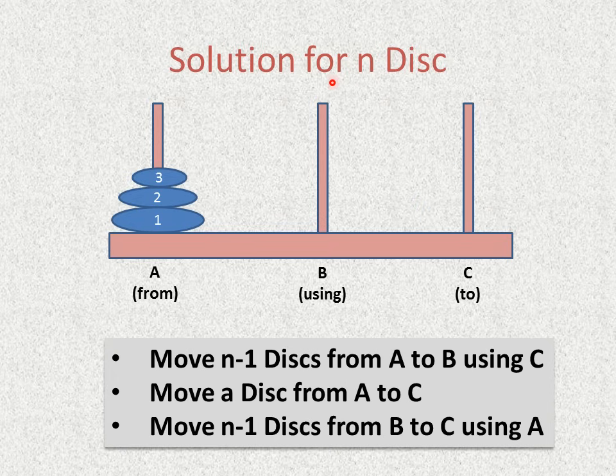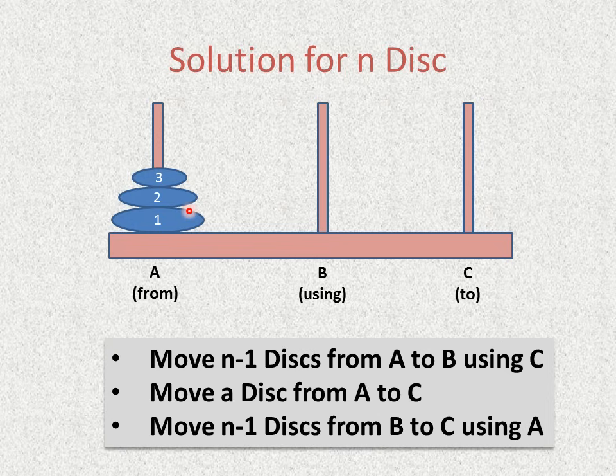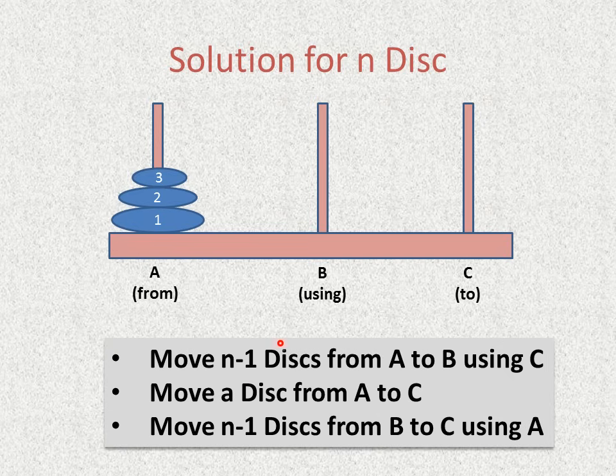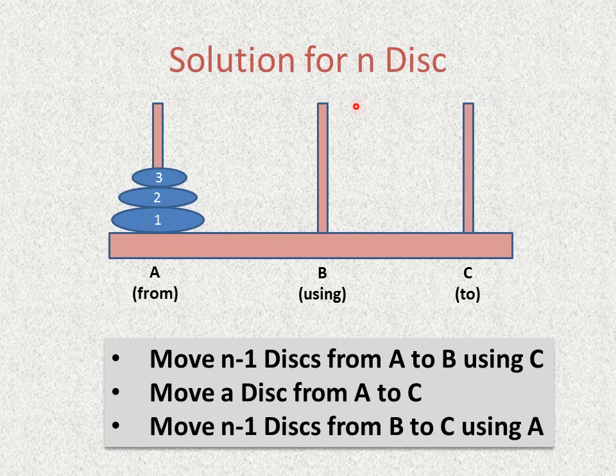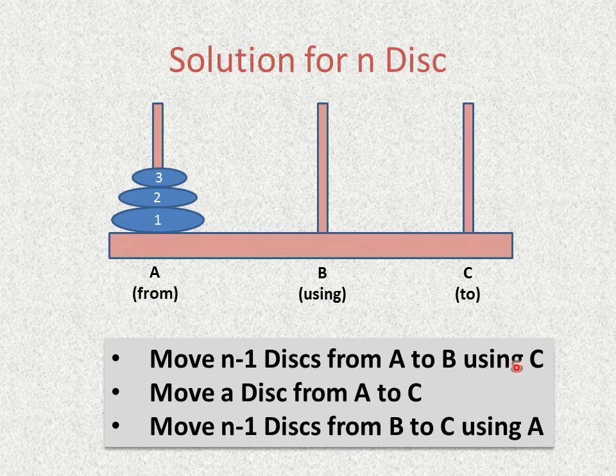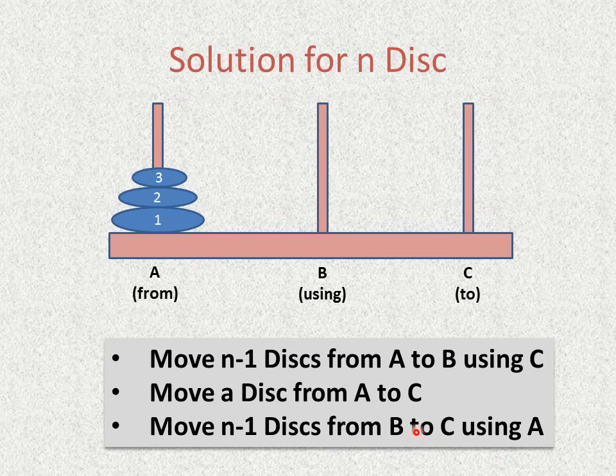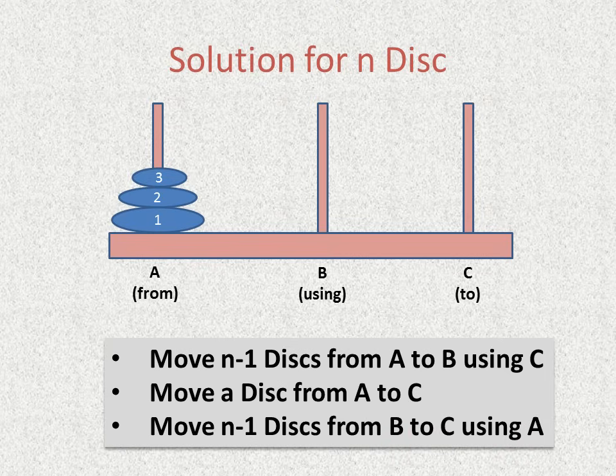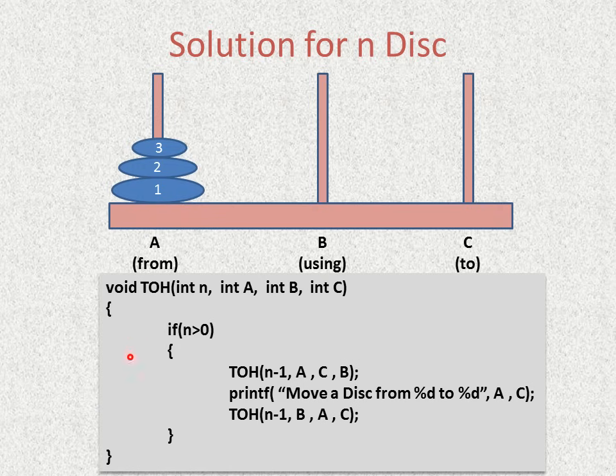If there are N disc then those three steps can be written like this. When there were three disc we wrote here two. So it means if it is four disc then we will write three. So similarly if there are N disc we write N minus one. So those three steps are repeated here. Move N minus one disc from A to B using C. Move a disc from A to C. And move N minus one disc from B to C using A. So this becomes our recursive algorithm for tower of hanoi.